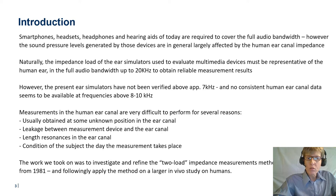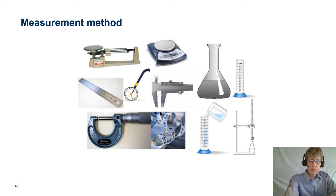The work we took on was to investigate and refine the so-called two-load impedance measurement method introduced by Rabinowitz in 1981, and subsequently apply the method on a larger in vivo study on humans. The two-load method is based on measurements in two known reference load cavities, thereby estimating the Thévenin equivalent of a transducer source or the input impedance of an unknown load connected to the source.